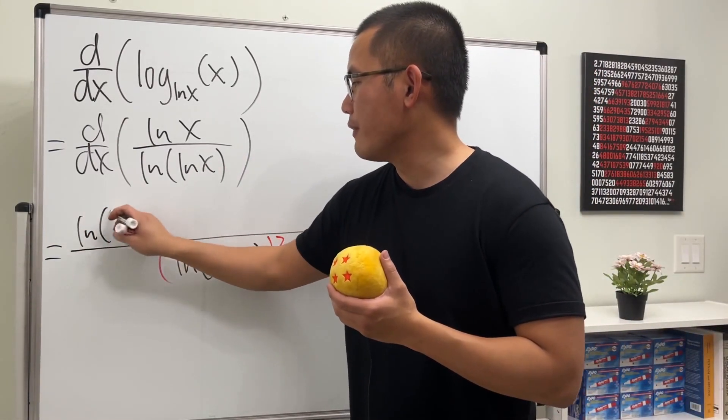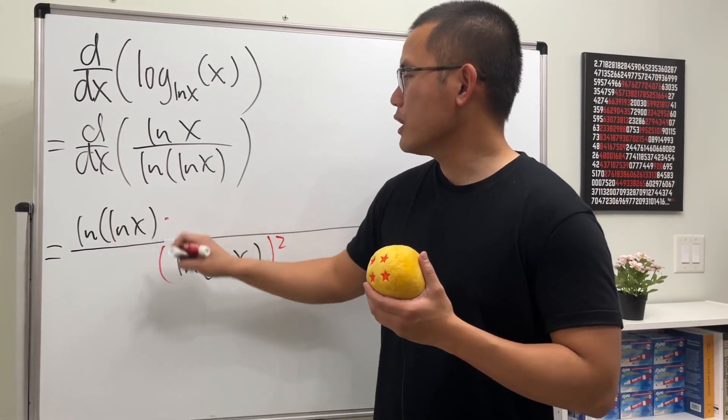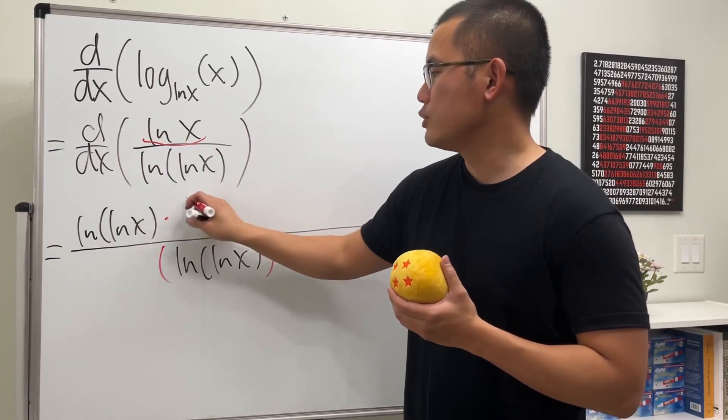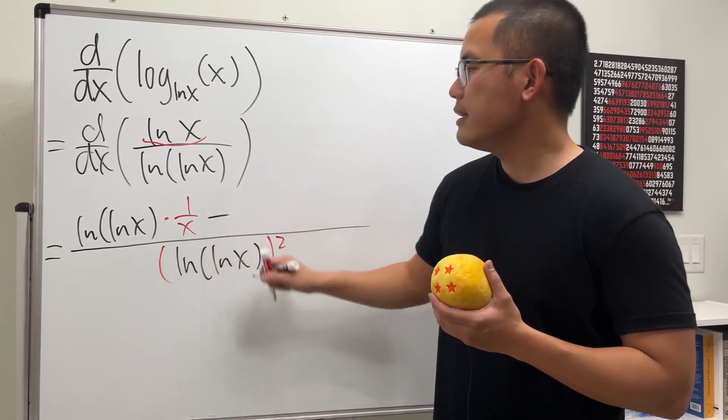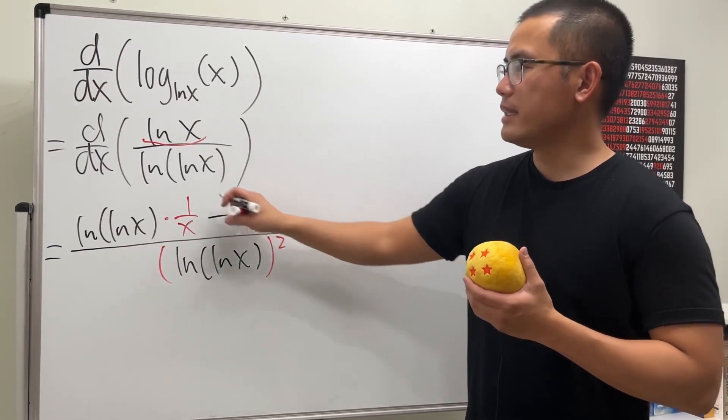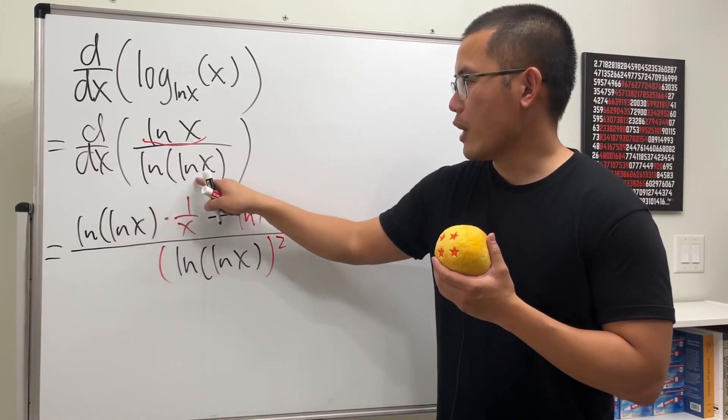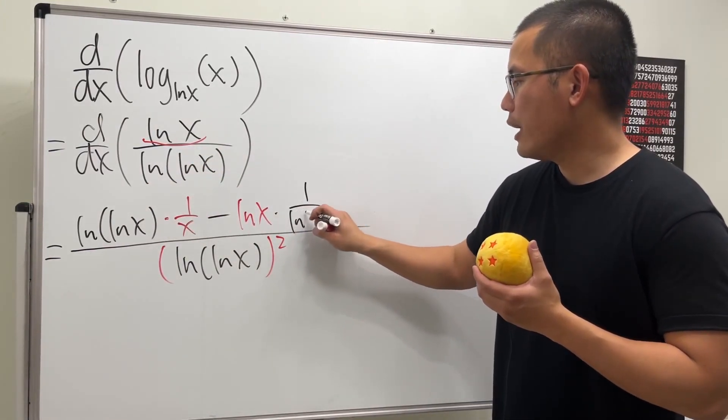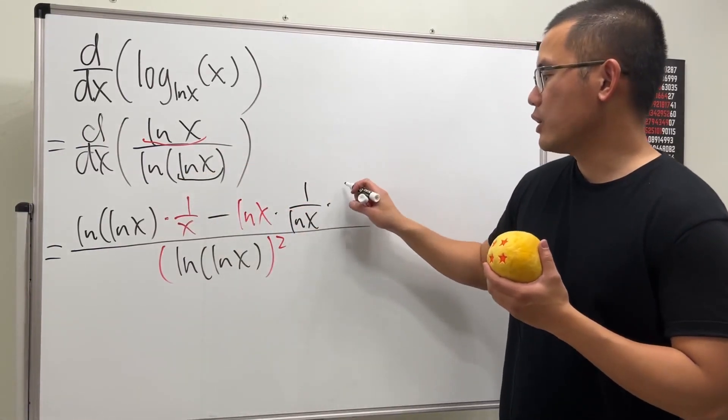on the top, which is ln(ln(x)), and we multiply by the derivative of the top, which is 1/x. Then we minus the top function, which is ln(x), and multiply by the derivative of the bottom. The derivative of ln(ln(x)) is 1/ln(x) times the derivative of that, which by the chain rule we multiply by 1/x. Now we can cancel things out a little bit.